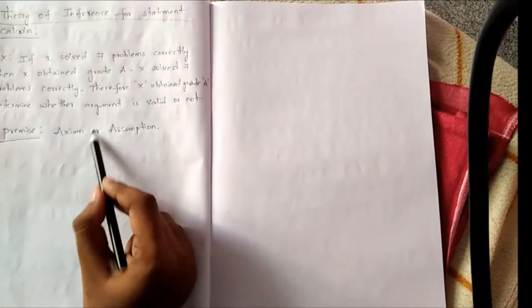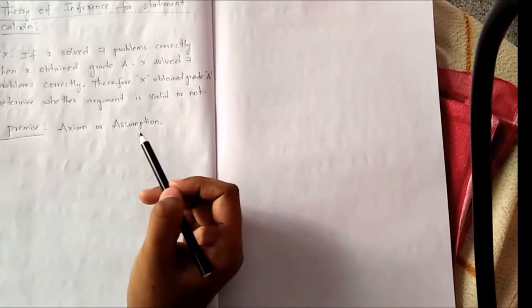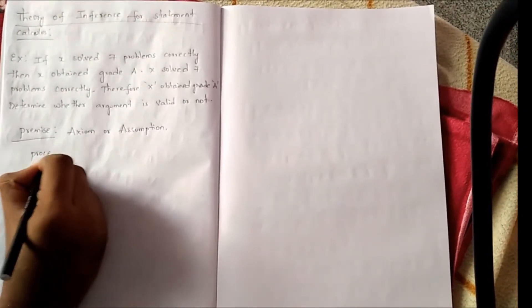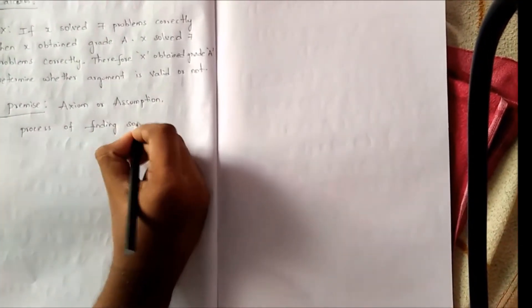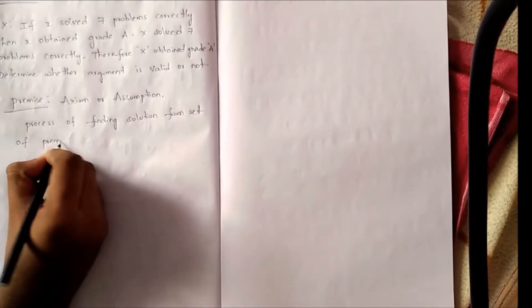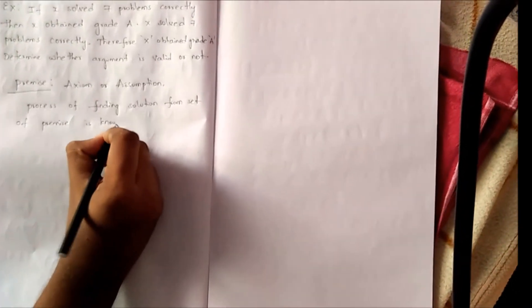The process of deriving the problem solution from set of assumptions is known as Theory of Inference. When I use these assumptions, I will derive the conclusion. The process of finding solution from set of premise is known as Theory of Inference.